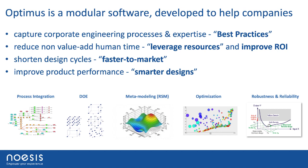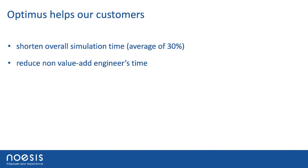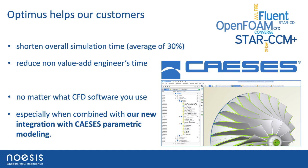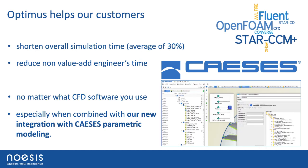This gives you a quick overview of Optimus and what it can do. To summarize: Optimus helps customers shorten their design cycle. Our studies show it shortens design time by an average of 30%, reducing non-value-added engineer time. No matter what CFD or design software you use, and especially today we'll show how it can help when combining with a tool such as CASIS.